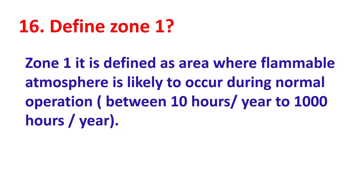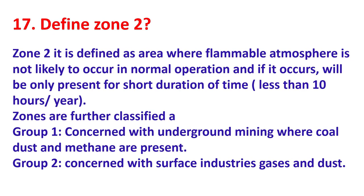Zone 1 is defined as an area where a flammable atmosphere is likely to occur during normal operation, between 10 hours per year and 1000 hours per year. Zone 2 is defined as an area where a flammable atmosphere is not likely to occur in normal operation, and if it does occur, it will be present only for a short duration of time — less than 10 hours per year.